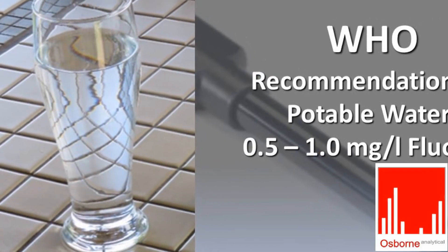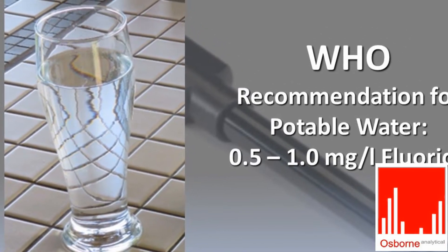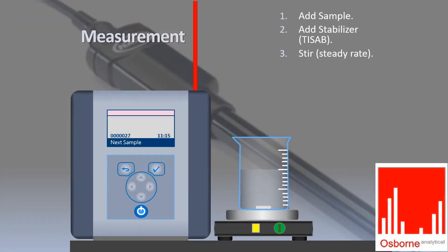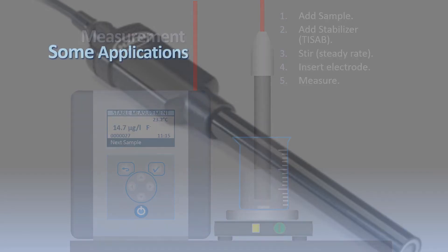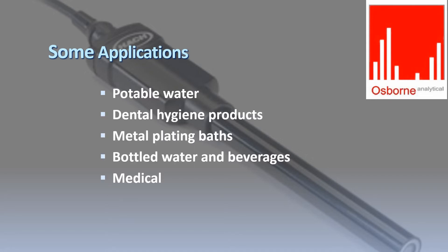The World Health Organization recommends 0.5 to 1 mg per liter fluoride in drinking water, and the ISE method is inexpensive and ideally suited to water testing at this level. It can also be used for dental hygiene products, metal plating baths, bottled water and beverages, and several medical applications.